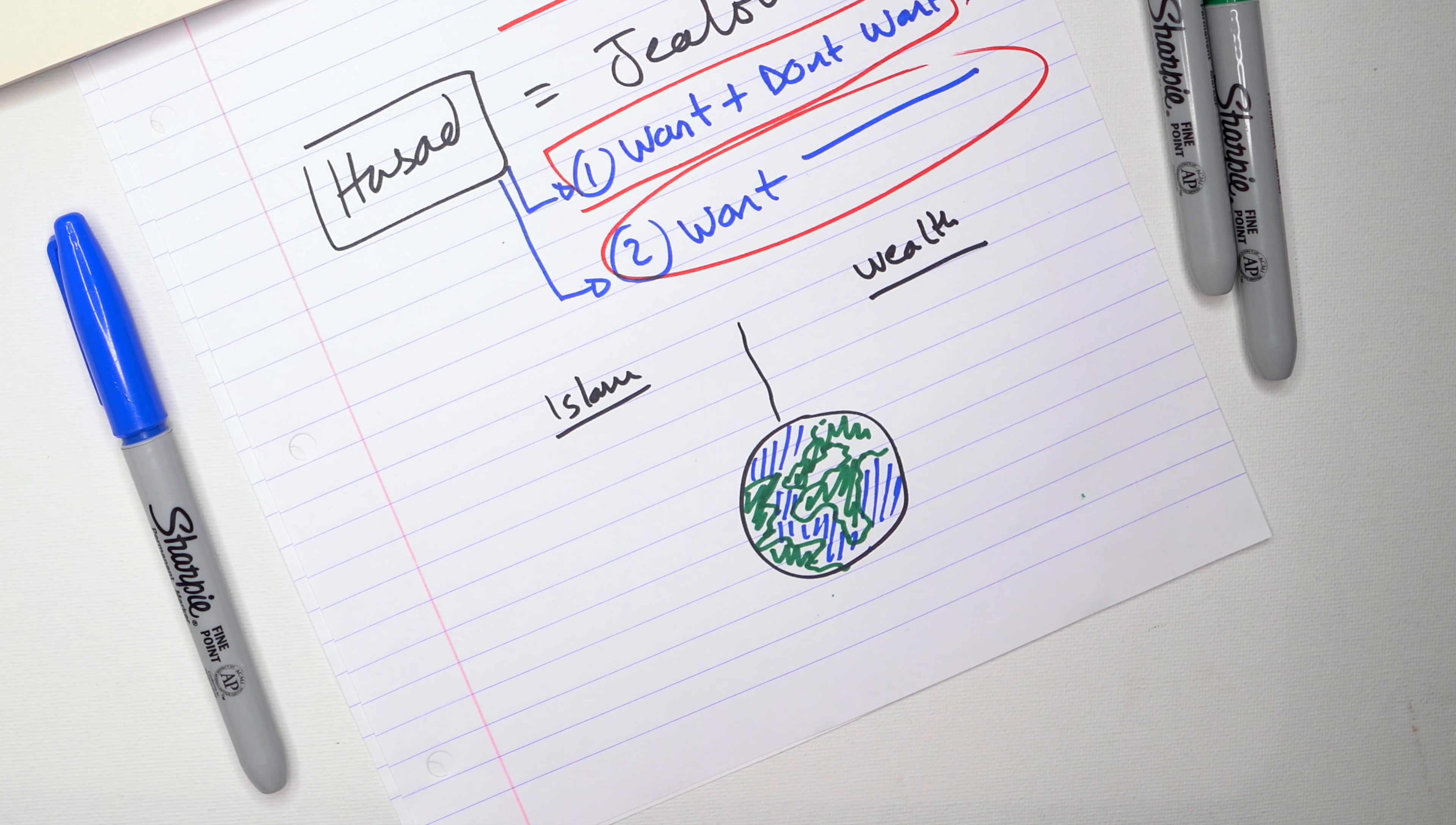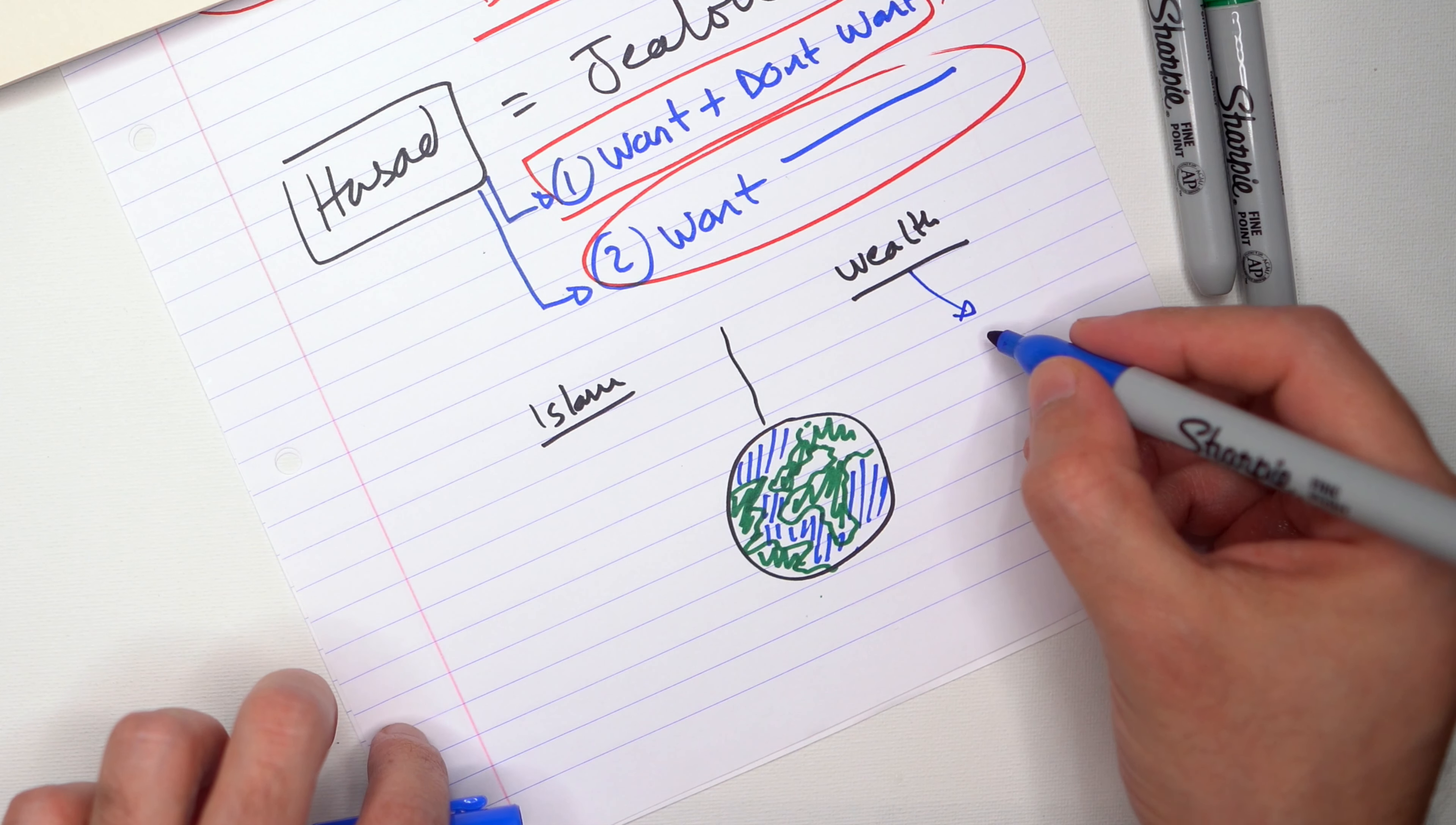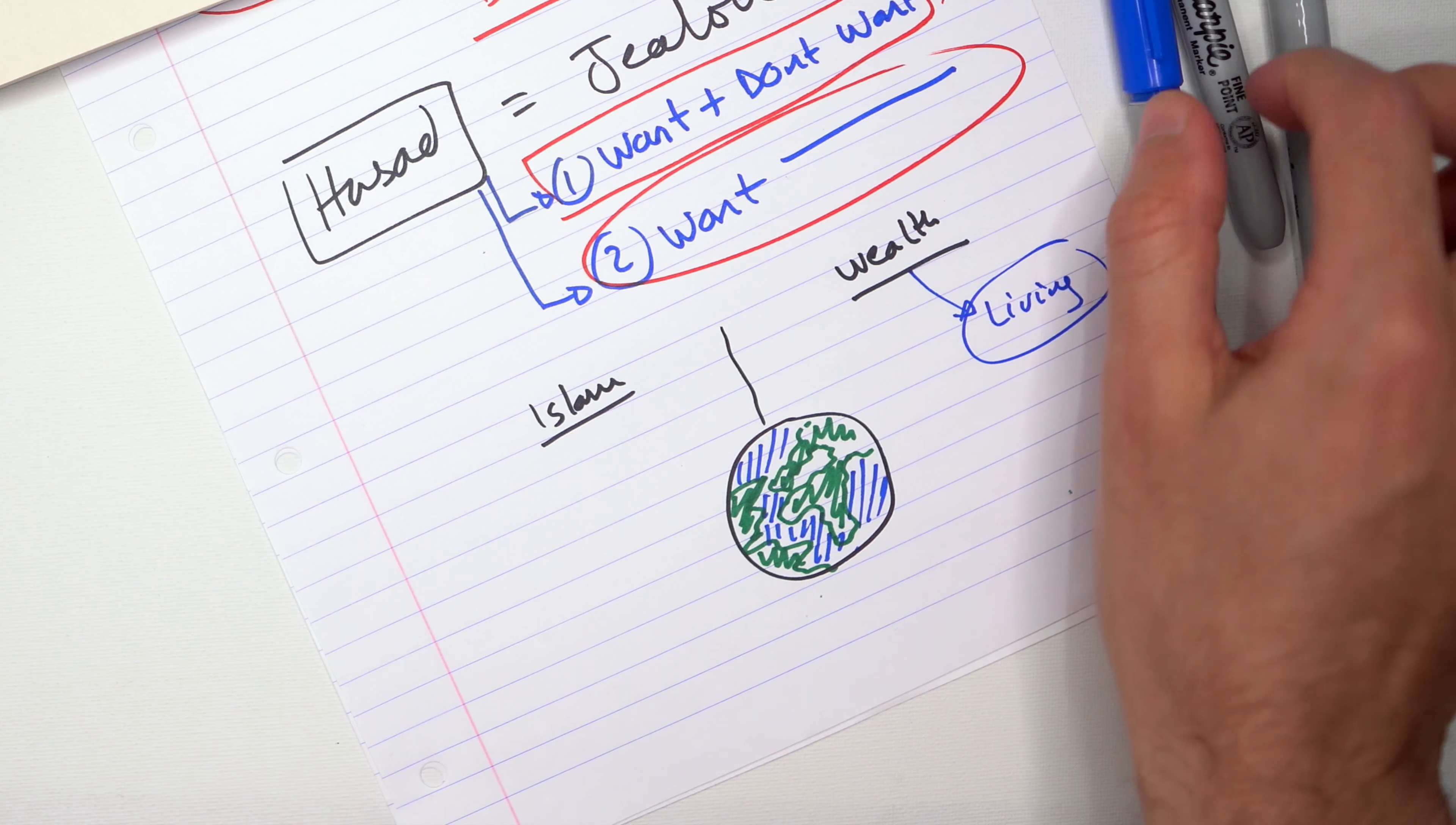So in the world we have all these different things happening. And we said you're not allowed to want something and you don't want the other person to have it. That's not allowed. So you can say in the world, things are divided for a Muslim in two parts. One is Islam and one is wealth. So Islam and wealth are two important things. Everyone needs both of them.